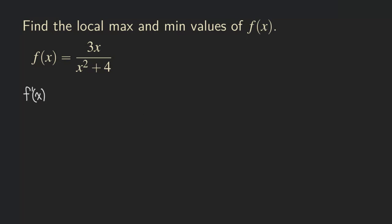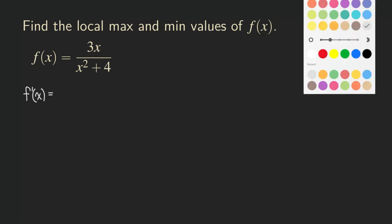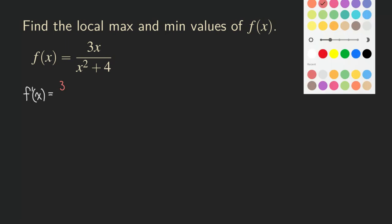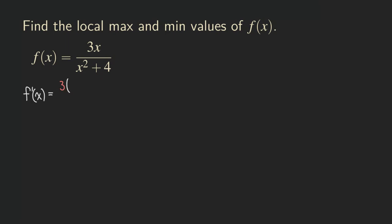So let's start taking the derivative. We are going to differentiate the numerator, which is going to be three. Then we are going to copy from the denominator, which is x squared plus four. So we have minus, and then the next step is copying the numerator, and then we differentiate the denominator, which is going to be two x.